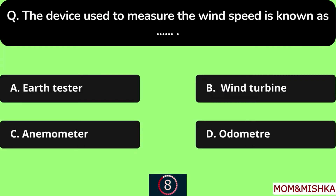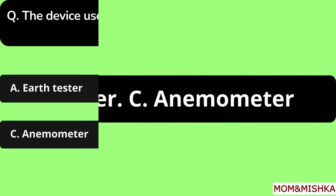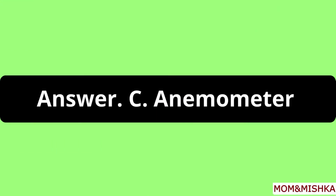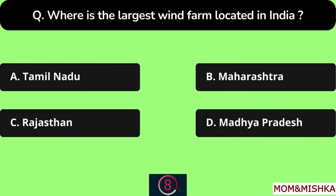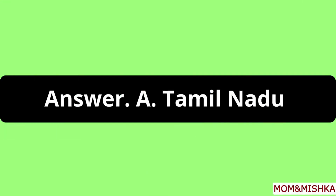The device used to measure the wind speed is known as an anemometer, Option C. Where is the largest wind farm located in India? It's in Tamil Nadu, Option A.